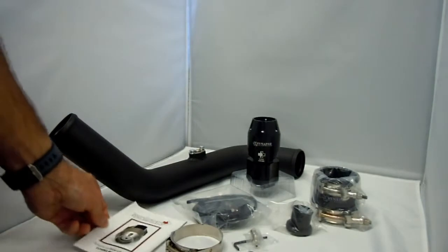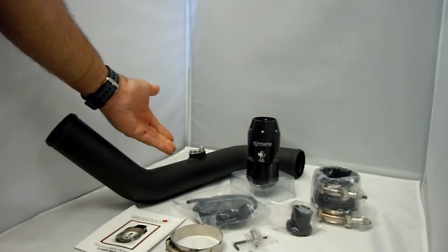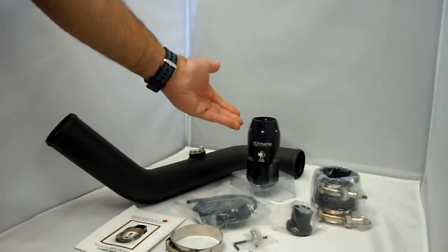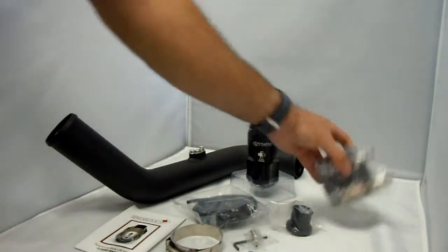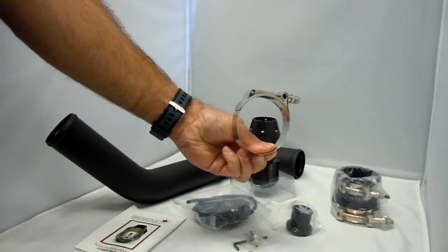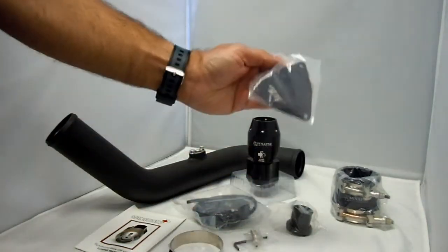This kit includes the following items: the charge pipe in powder-coated black or polished silver, the blow-off valve, the throttle body to charge pipe coupler with T-bolt clamps, additional T-bolt clamp for charge pipe to factory lower intercooler pipe, and the TD-04 Block-Off Plate Boost Connect Kit.